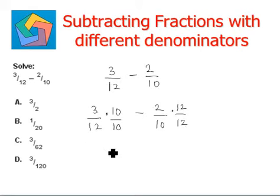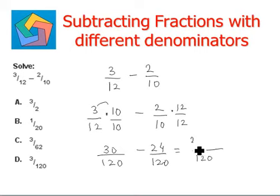3 times 10 is 30, 12 times 10 is 120, minus 24, divided by 120. Now we have the same denominator, so 120, 30 minus 24,